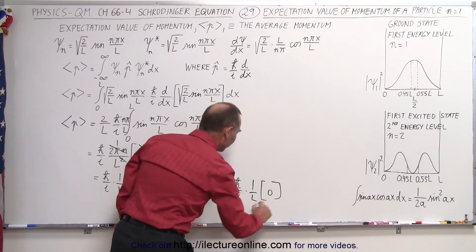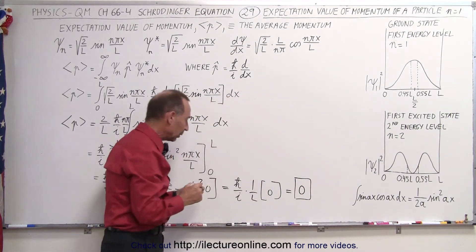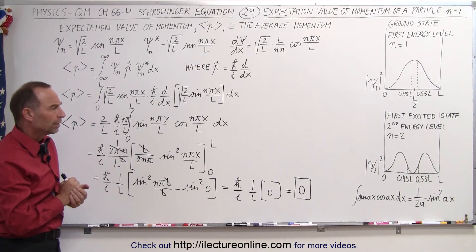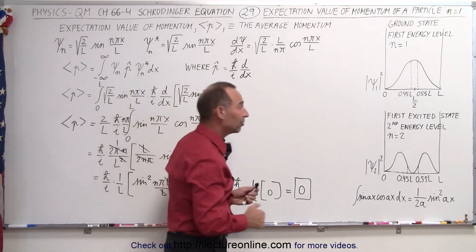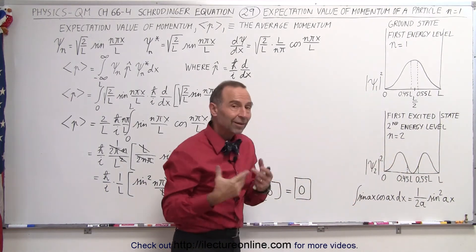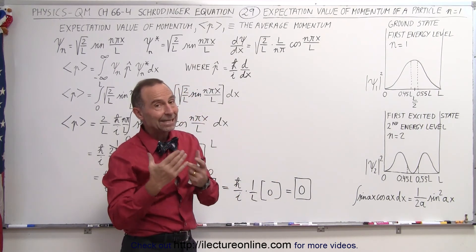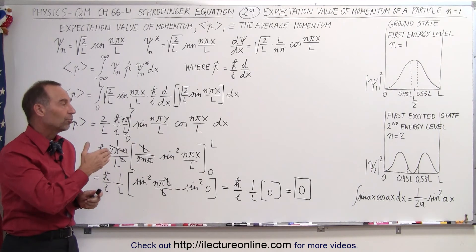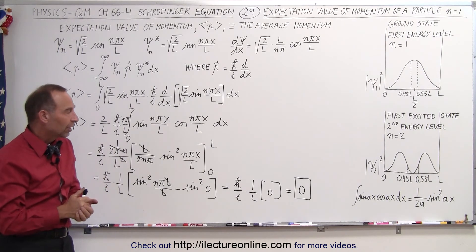So this ends up being equal to h-bar over i times 1 over L times 0 for all values of n, which means that the expectation value of the momentum of a particle in a one-dimensional box is always 0 for any energy level. That seems strange since we know the particle is moving back and forth. However, whatever the motion is to the right is equal to the motion to the left — there is a symmetry — so the positive and negative values cancel, giving an average momentum of zero for any energy level.